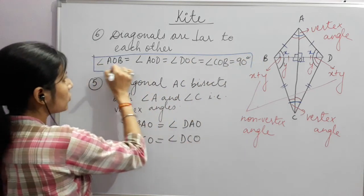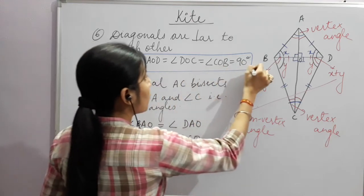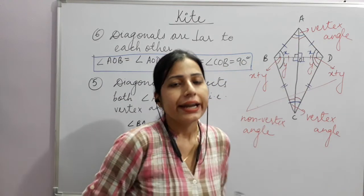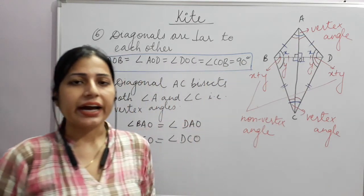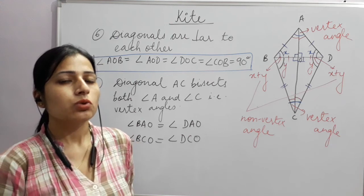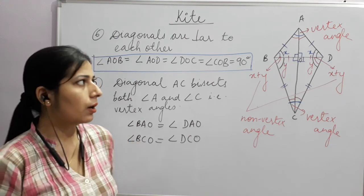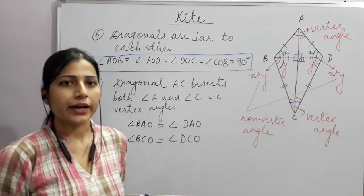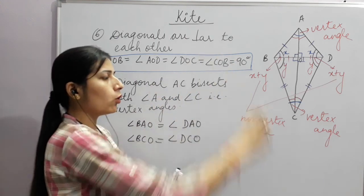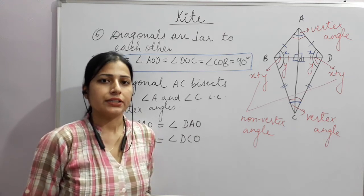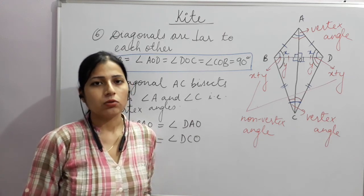This means wherever the diagonals intersect, they form a 90-degree angle. So this was all about the properties of a kite. We have covered all the properties of a kite here. Thank you all.